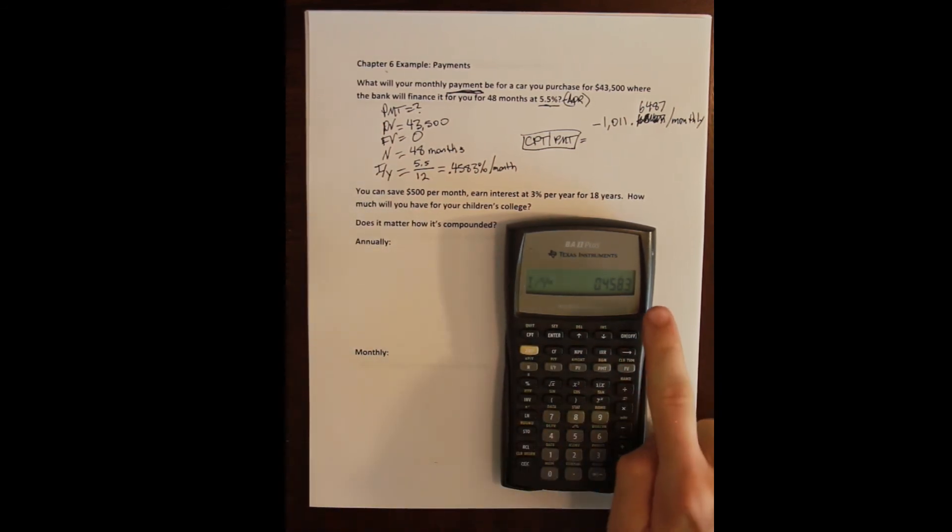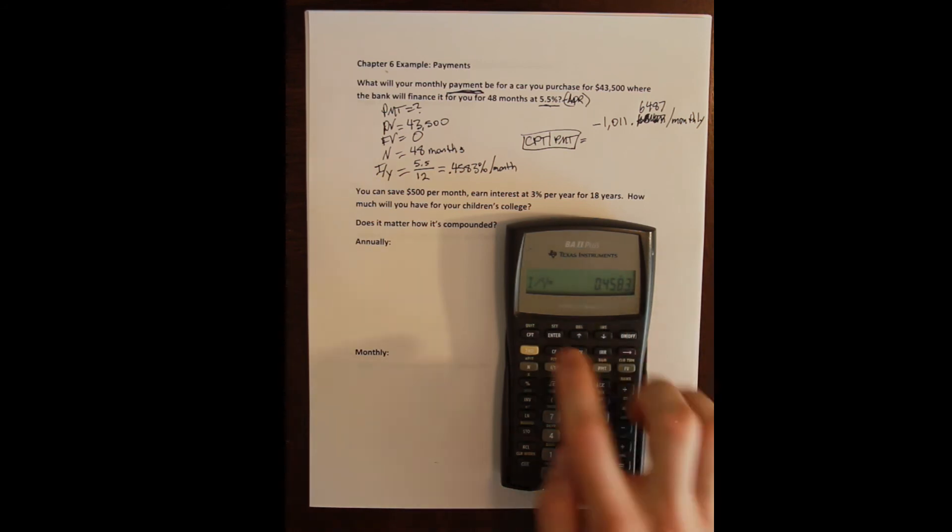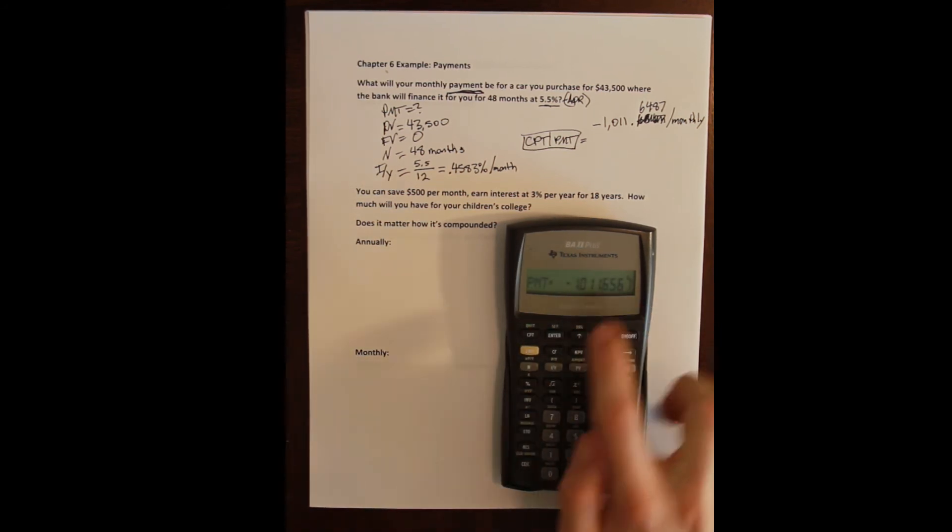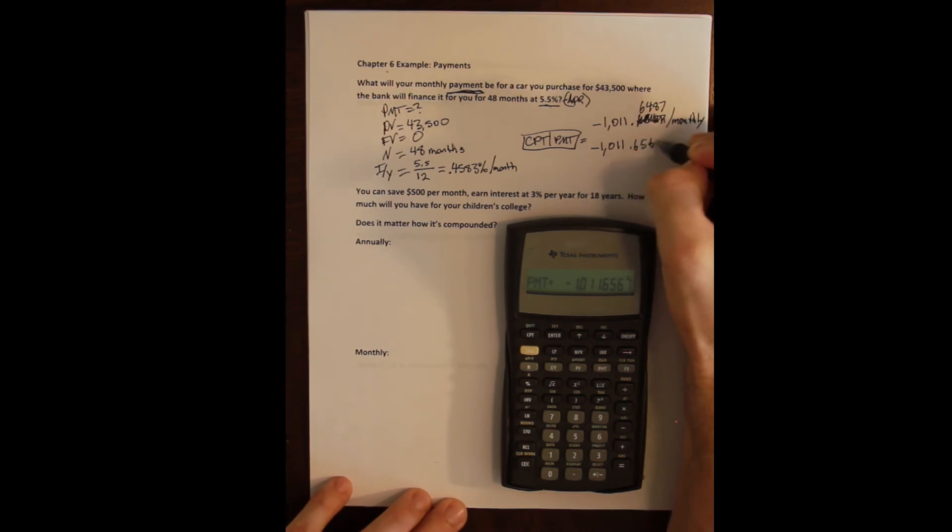This will allow the time value of money to store the unrounded answer even though it's displaying the rounded one. And now when I compute my payment I get the unrounded adjusted answer here which is point six five six seven which is what I originally wrote.